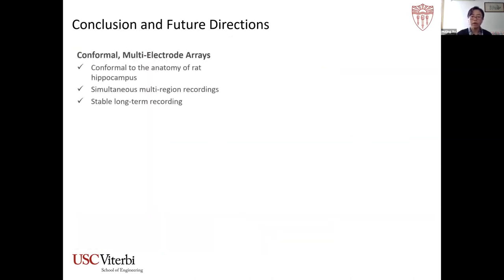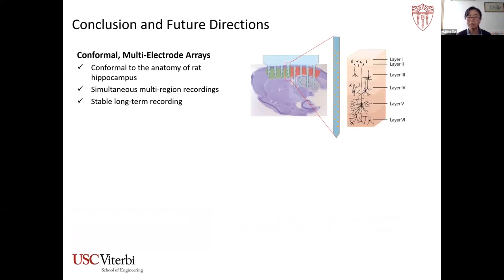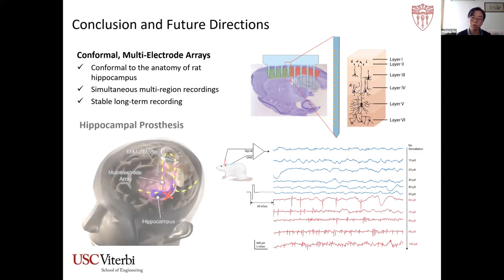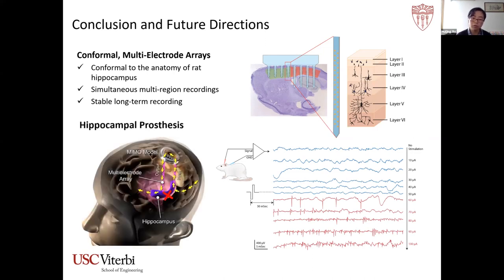In summary, we developed a flexible multi-electrode array conformal to the anatomy of the rat hippocampus, and demonstrated that simultaneous recording from multiple subregions with this array is feasible, with stable long-term recordings from several animals. Such methods are not limited to the hippocampus — with special designs, polymer arrays can target both cortical and subcortical regions. We are also exploring the addition of stimulation functions to evaluate how these devices can deliver current to surrounding tissue, bringing us closer to developing devices for hippocampal prosthetics.